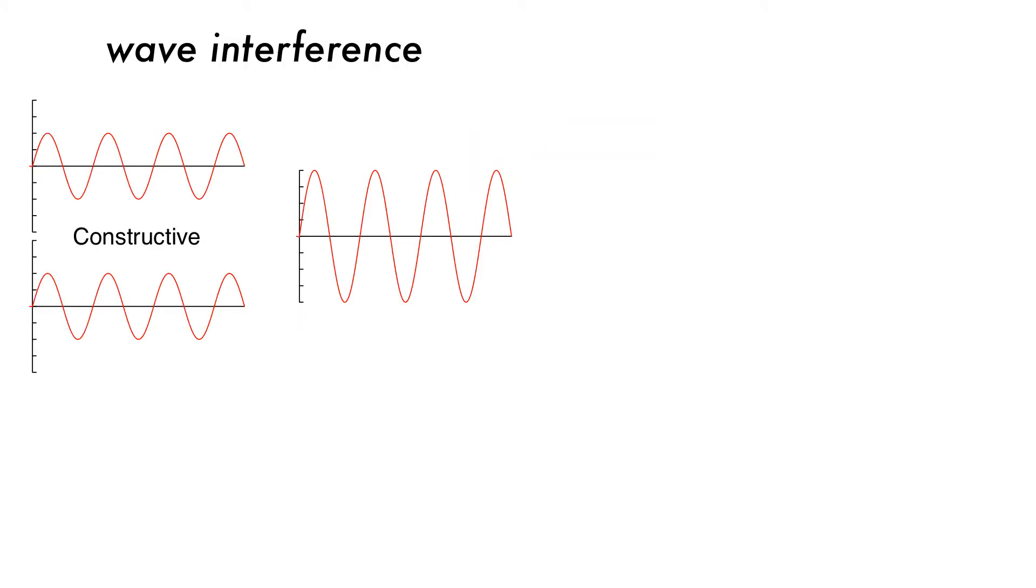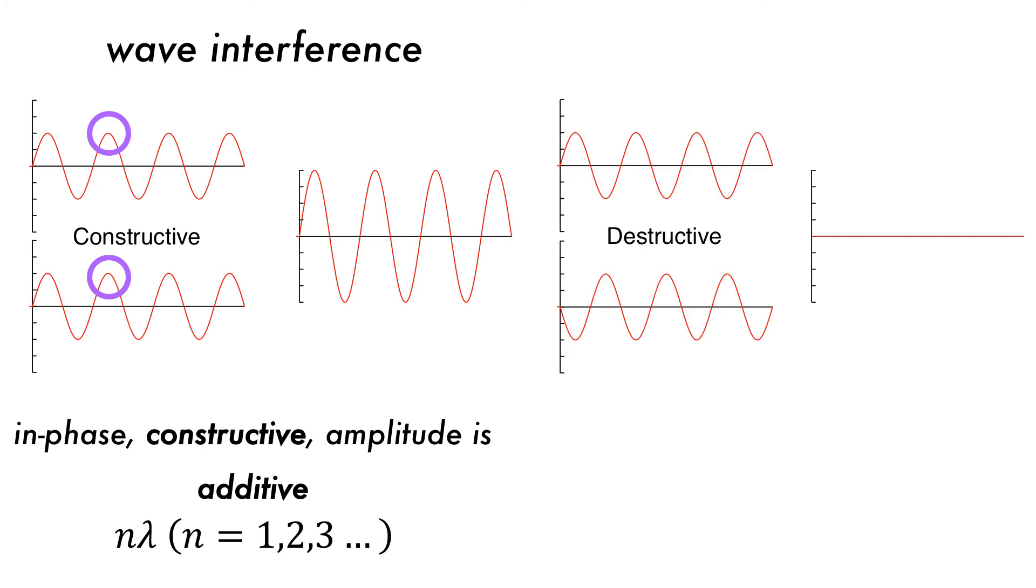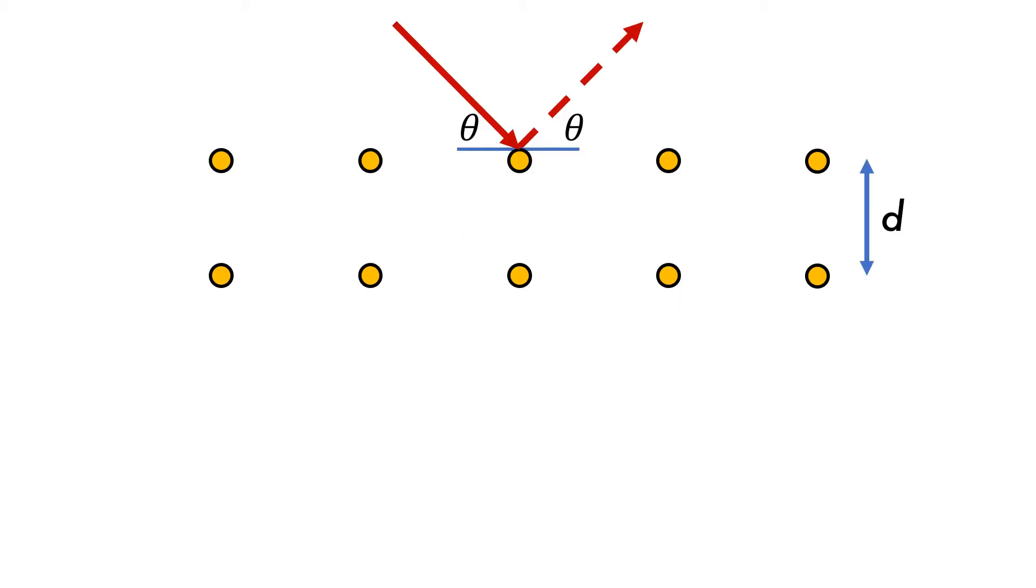For a signal to be observed, the waves must interfere constructively. That means that they are in phase and the amplitude is additive as some integer multiple of the wavelengths. If the signals are not in phase, then destructive interference happens, reducing or eliminating the signal entirely. This can happen when the sample is not crystalline. How do we use this information to find lattice spacing though?